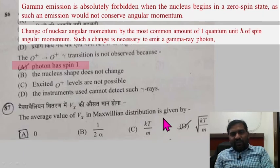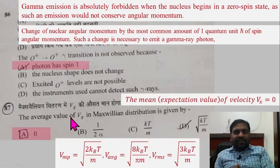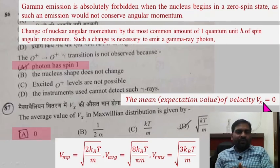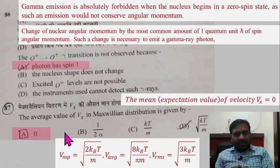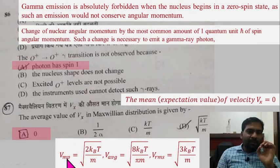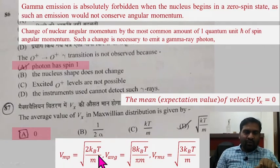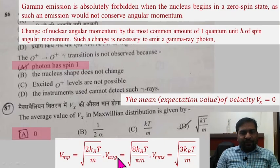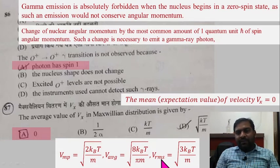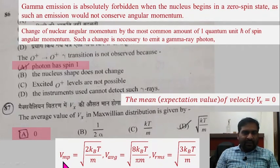Question 87: The average value of vx in the Maxwell-Boltzmann distribution. The mean value of velocity component vx is zero, because positive and negative velocities cancel. However, the speeds (magnitudes) are: most probable speed = √(2kBT/m), average speed = √(8kBT/πm), root mean square speed = √(3kBT/m). For the average of vx specifically, the answer is 0. Option 0 is given and correct.